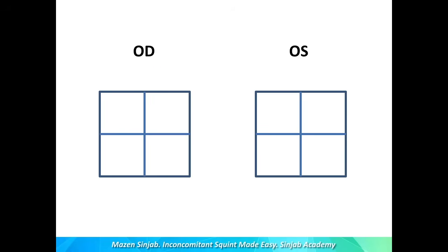Now let us start the steps to determine the affected muscle. First, I use these two squares and I put the muscles on them. I start with the muscles responsible for elevation: in the right eye, the superior rectus is in the lateral part and the inferior oblique is in the medial part — the same for the left eye. Then I put the muscles responsible for depression: the inferior rectus in the lateral part and the superior oblique in the medial part, for both right and left eye.